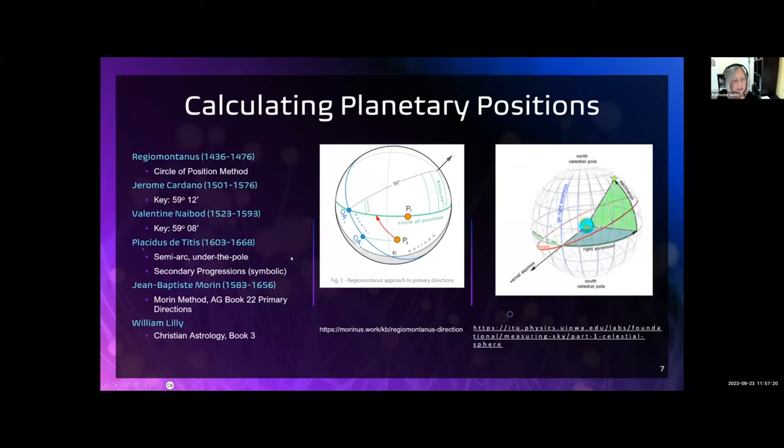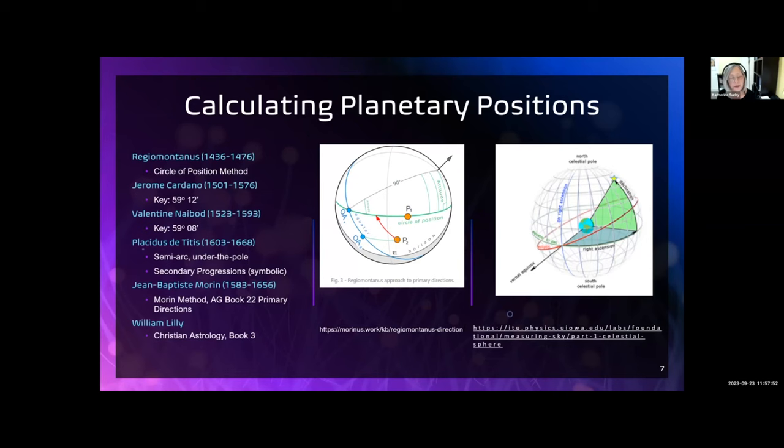The keys associate the planet's movement to years of life. They are based on the sun's annual movement around the Earth, and different keys attempt to refine how fast the sun is actually moving. So Ptolemy had one degree per one year of life. Cardano refined it to 59 degrees in 12 minutes. And Nabod went to 59 degrees in 8 minutes, based on using 365 days and a quarter, versus just 360 degrees as Placidus did.